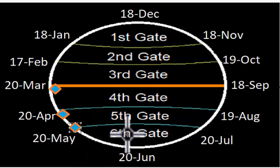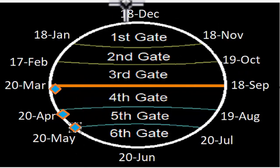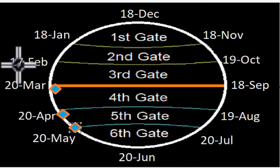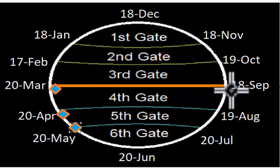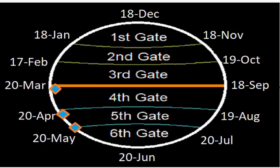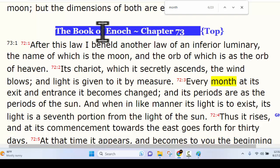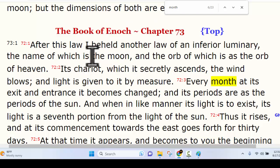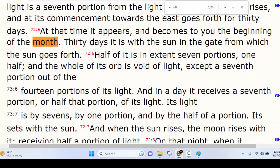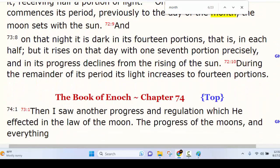So is that the beginning of a new month? What the scripture says and what Enoch says is that you have to have the representation of all three: the sun, the moon, and the stars. The stars are like the numbers on a clock — they never move, they're always in the same place. The sun is going around, the moon is going around, and when you have both the sun and the moon meet up in the gate, you have a new month starting. Let's look at Enoch chapter 73, where we learn about the inferior luminary — the moon.